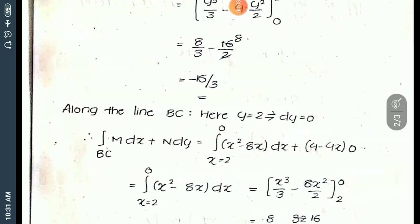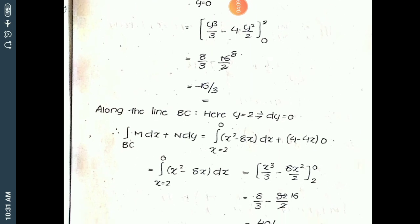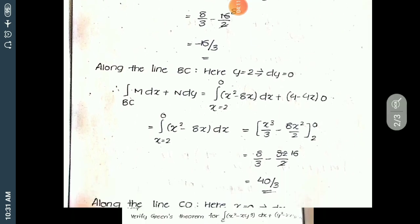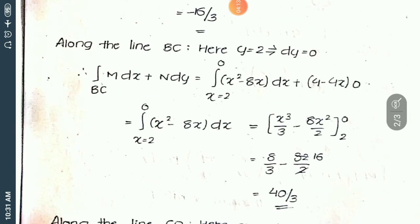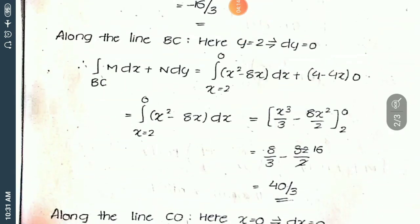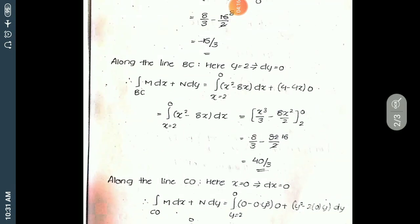Similarly, along line BC, the constant coordinate is y = 2 and dy = 0. Substituting into M dx + N dy, the answer is 40/3.